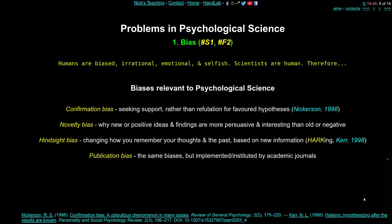The logical premise here is: scientists are human; humans are biased, irrational, emotional, and selfish; therefore we should really expect to see bias in science. Stuart Ritchie opens his book by saying that science is a social construct and we cannot get around that. In this section on biases I'm going to mention four. The first is confirmation bias, which has come up a couple of times in this lecture series already, and which the media are talking about quite a lot.